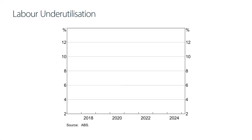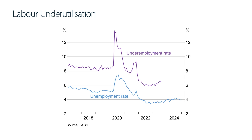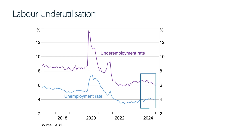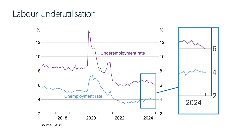In this graph, we have two measures of the strength of the labour market. The unemployment rate, which tracks people who are actively looking for a job but don't have one. And the underemployment rate, which tracks people who have a job but want to work more hours. Both unemployment and underemployment are lower than their average levels, indicating Australia's labour market is strong. We can also see in the graph that both measures declined or were basically unchanged in late 2024, whereas they had been increasing in 2023.